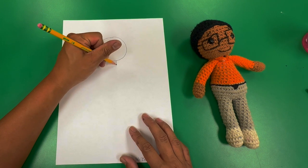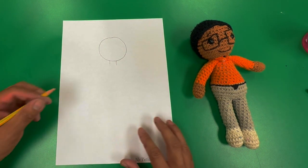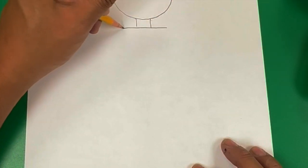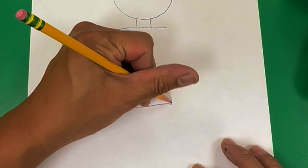Then underneath the head, I want you to draw two lines for the neck. Underneath the neck, a rectangle for the body.